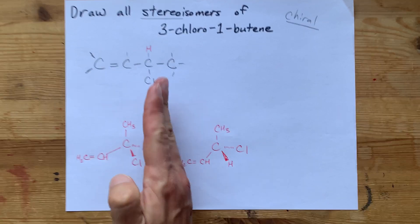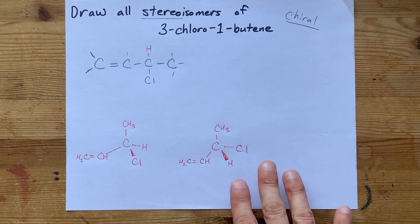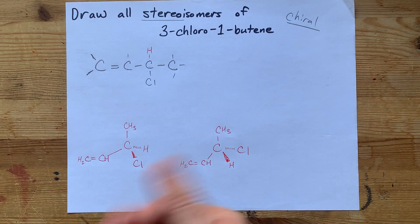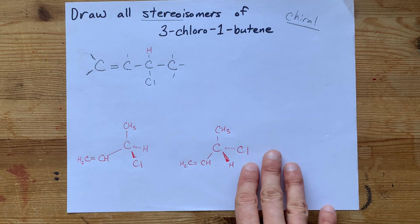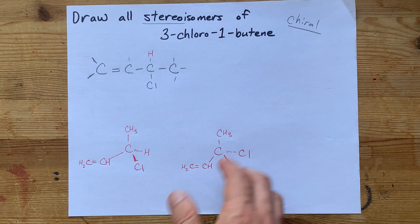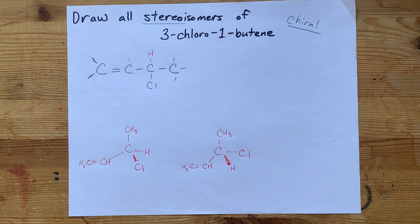Another option was to have a mirror here and then copy it to the other side of the mirror. But this is it. One of these is the R enantiomer and the other one is the S enantiomer. And those are the two stereoisomers for this molecule.